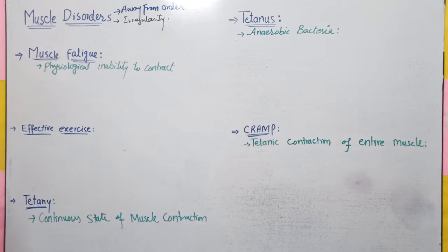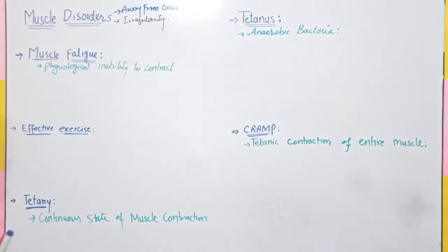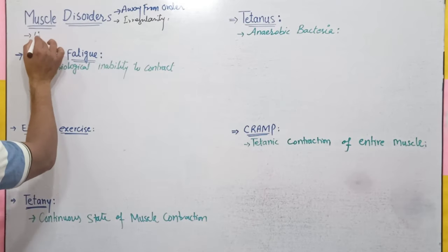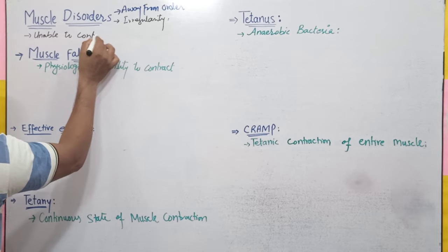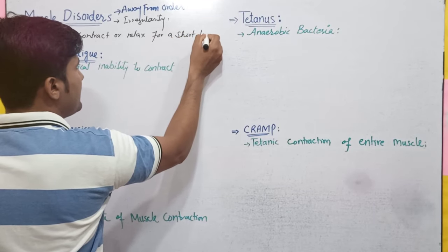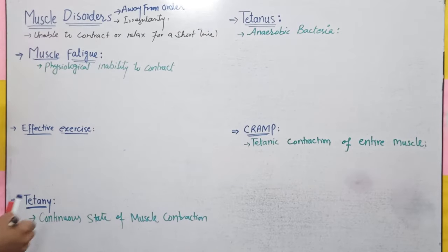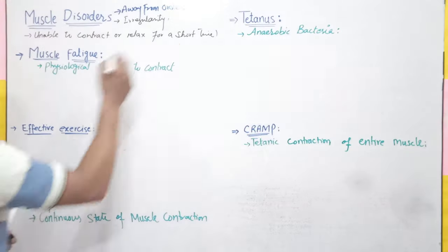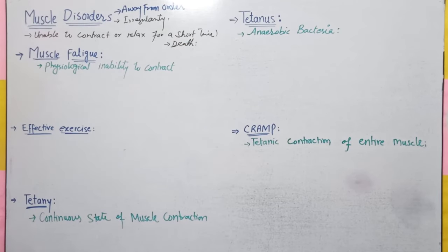Muscles do not perform their proper function — muscle apna function perform nahi karega. Muscle ka function kya hota hai? Contraction and relaxation. Yahan par muscles unable to contract and relax hote hain for a short time, ya phir kuch aisi disorders hain jisme whole life kaam nahi karta, aur even cause death bhi ho jaati hai. Humare paas 4 muscle disorders hain: muscle fatigue, tetany, tetanus, aur cramp.